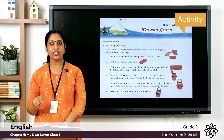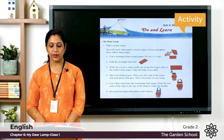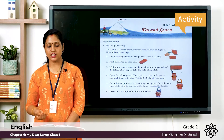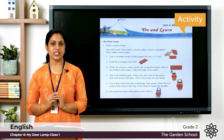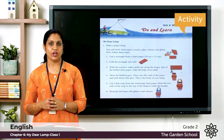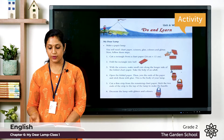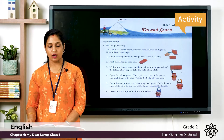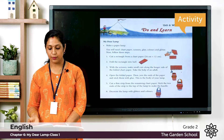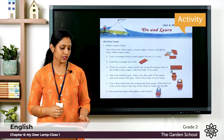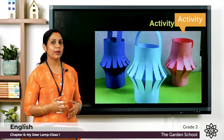Step four: Open the folded paper, then join the ends and stick them with glue — this forms the body of your lamp. Step five: Cut a thin strip from the remaining chart paper and stick the two ends of the strip to the top of the lamp to make the handle. Step six: Decorate the lamp with glitters and colors. Your paper lamp is ready!